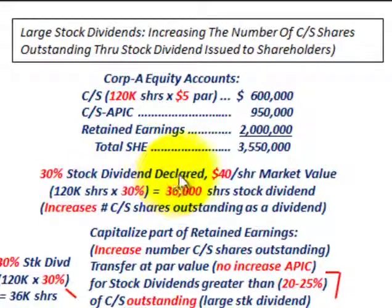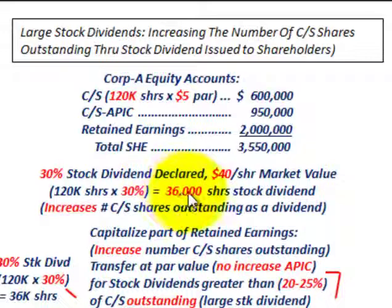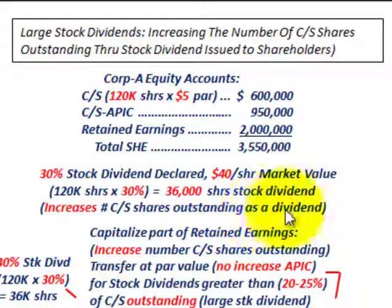They issue a 30% stock dividend, declared when the market price of common stock is $40 per share. With 120,000 shares outstanding at a 30% dividend rate, that equates to 36,000 additional shares that will be issued to current stockholders as the stock dividend. So we're increasing the number of common stock shares outstanding as a dividend.